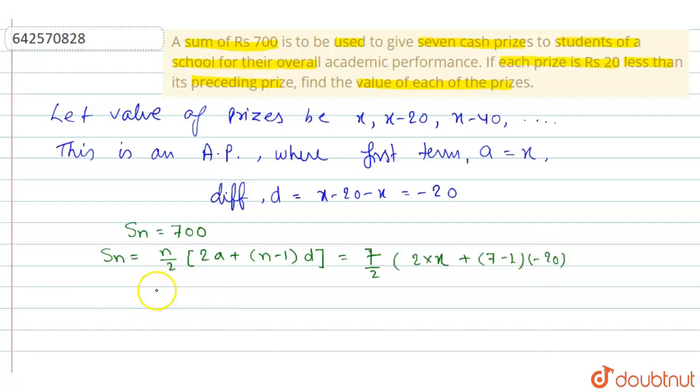So this gives us 700 is equal to 7 by 2 into taking 2 as common x minus 60. So this 2 will be cancelled.